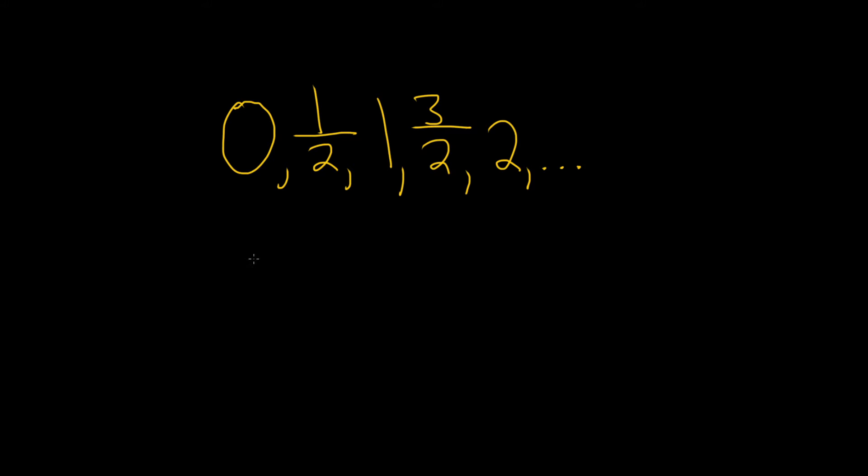So there is a formula that we can use to do this problem. The formula tells us that a sub n is equal to the first term, which is a sub 1, plus parentheses n minus 1, times d.